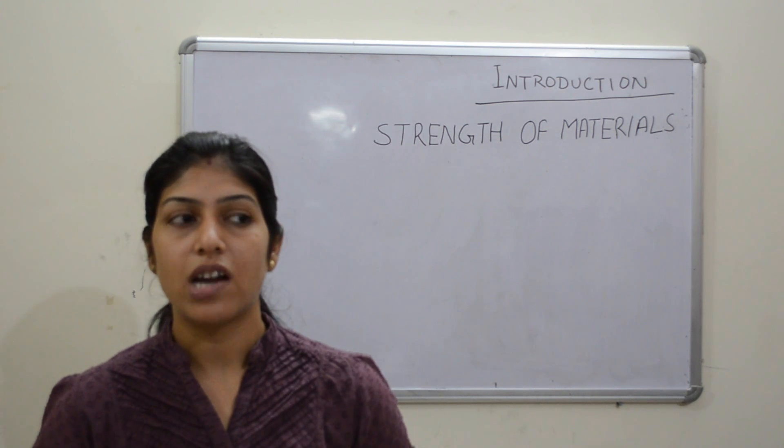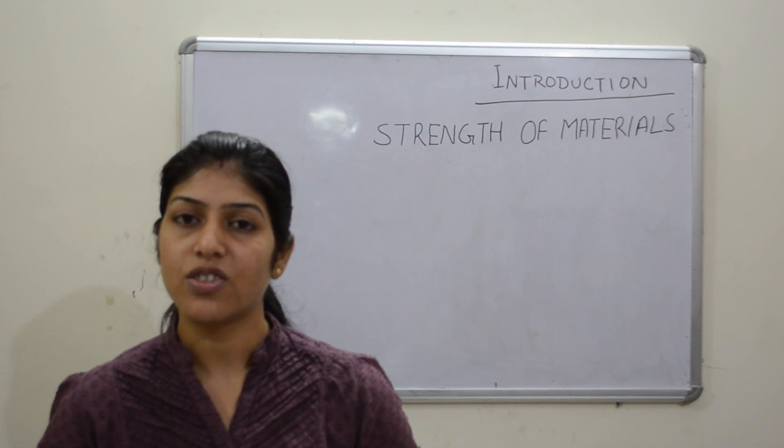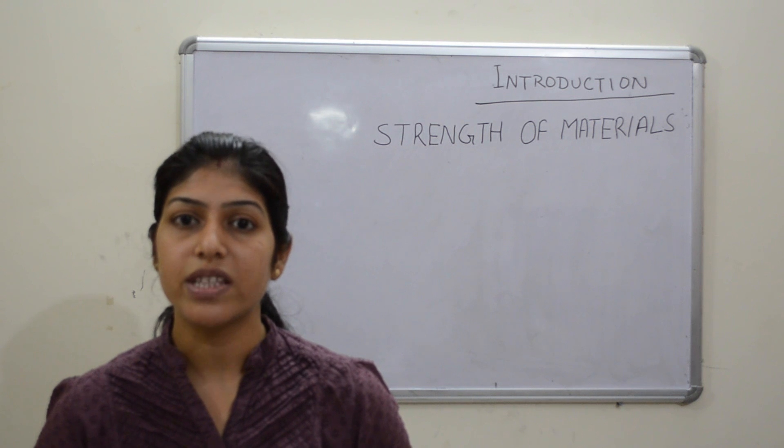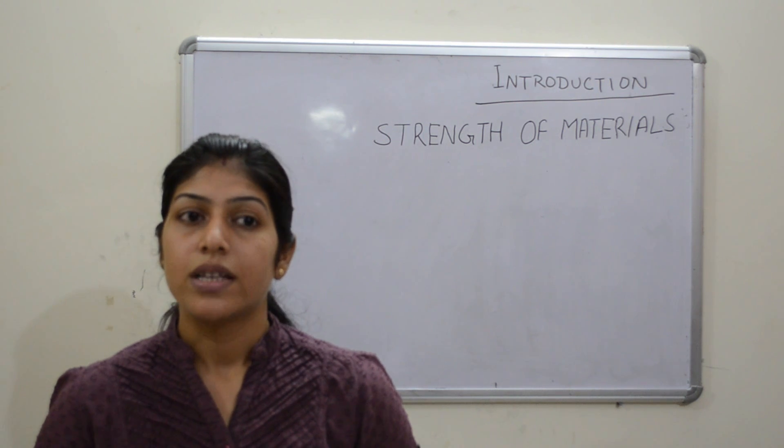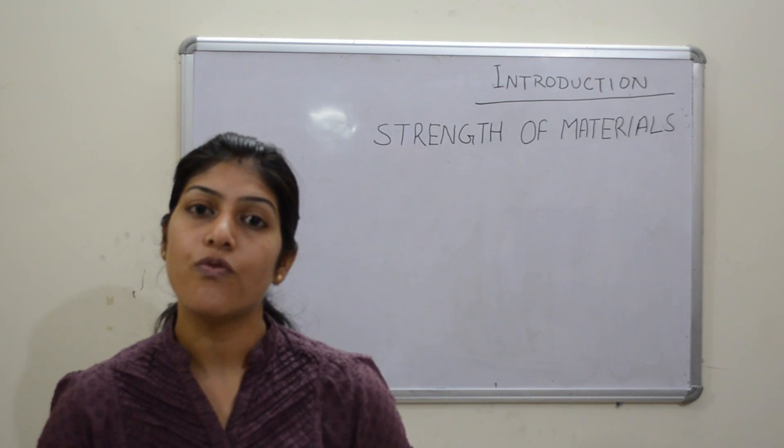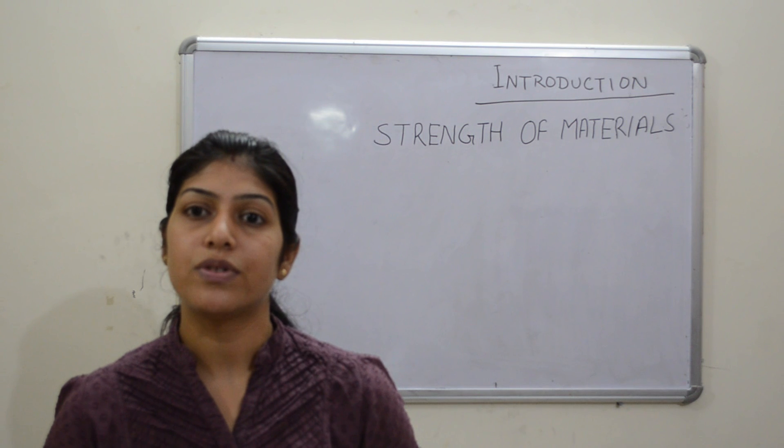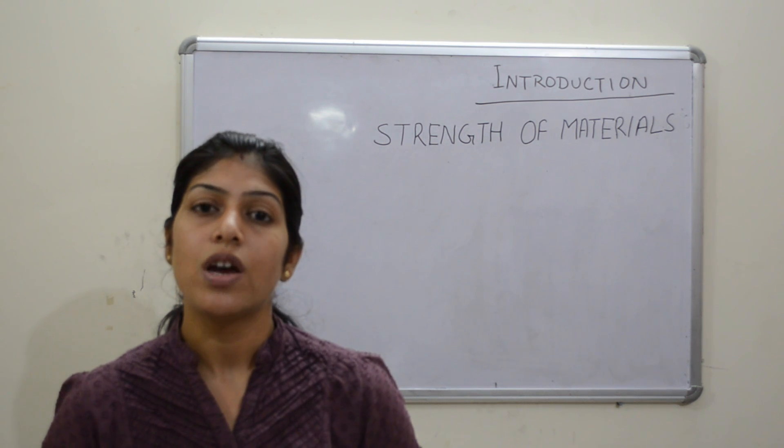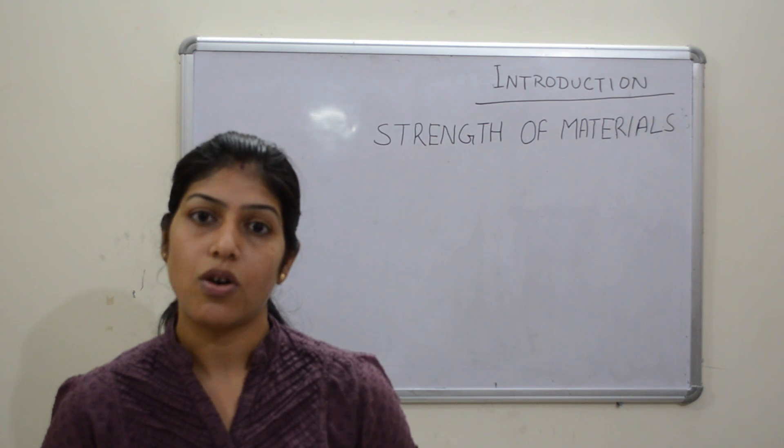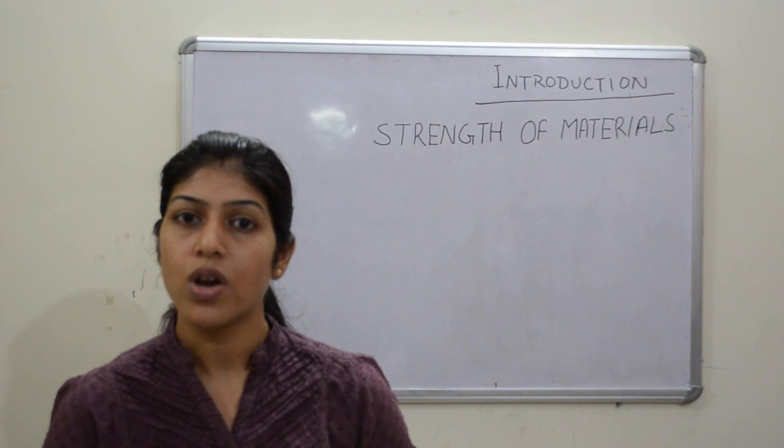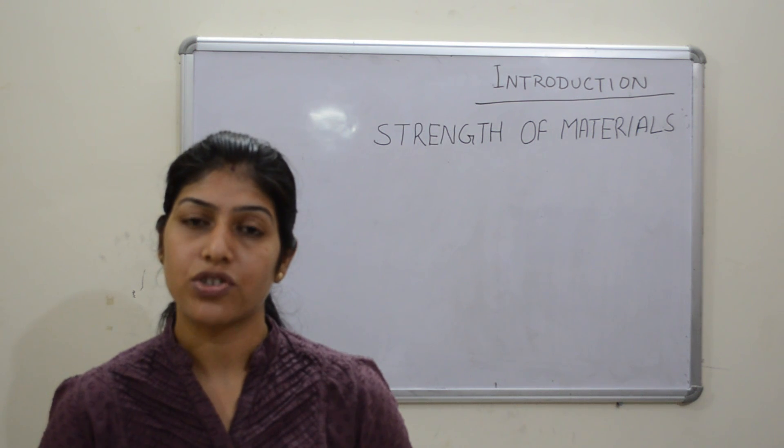So we will start with the basic introduction of strength of material. What is strength of material? Strength of material is basically a subject which deals with the behavior of different solid objects which are subjected to stress and strain. The study of strength of material is often referred to various methods of calculating the stress and strain in any type of structural or any kind of solid object which is subjected to different loads. So basically this is the calculation of stress and strain for any kind of structural member.